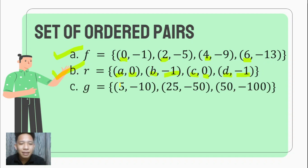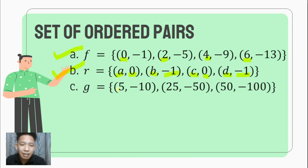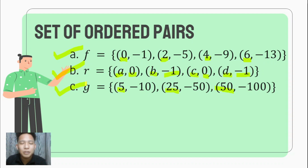Next, we have (5, -10), (25, -50), and (50, -100). If we take a look at the values of X, none of them repeat, so this set of ordered pairs also represents a function.